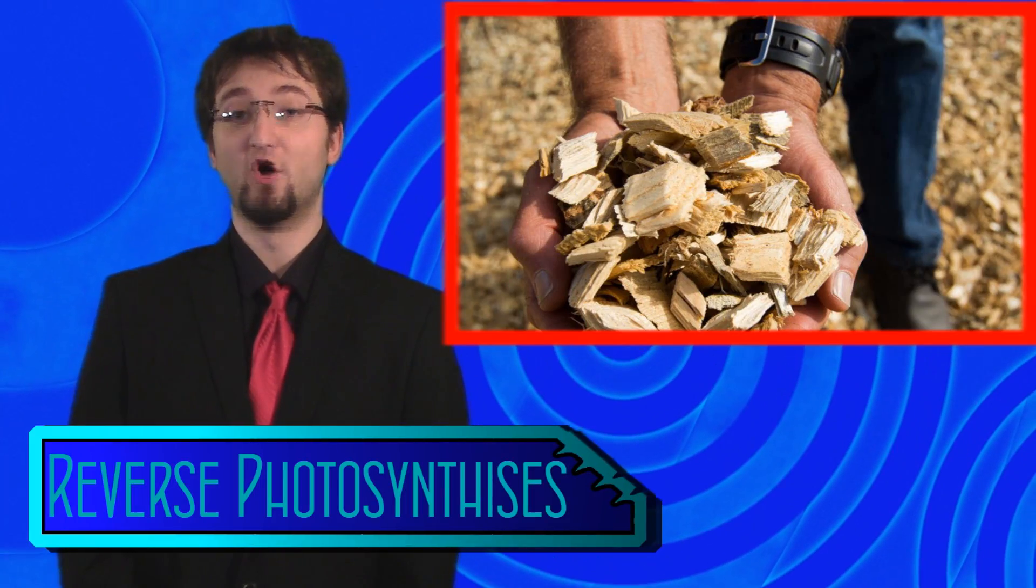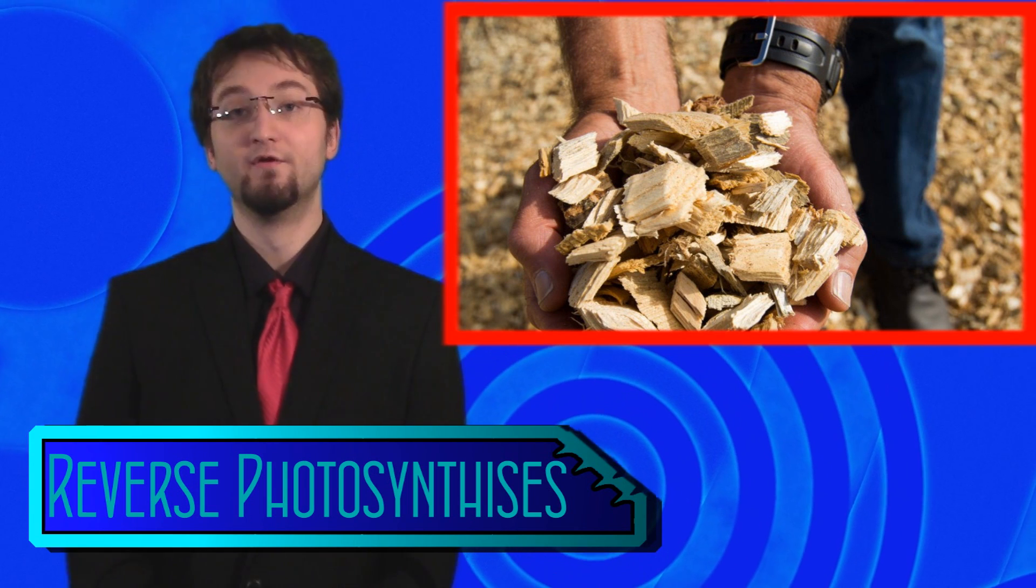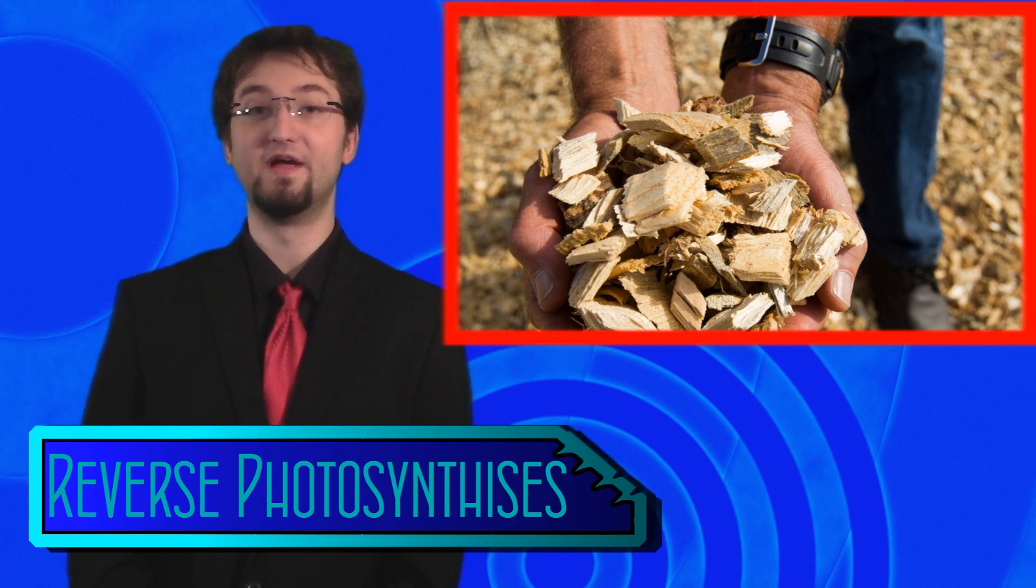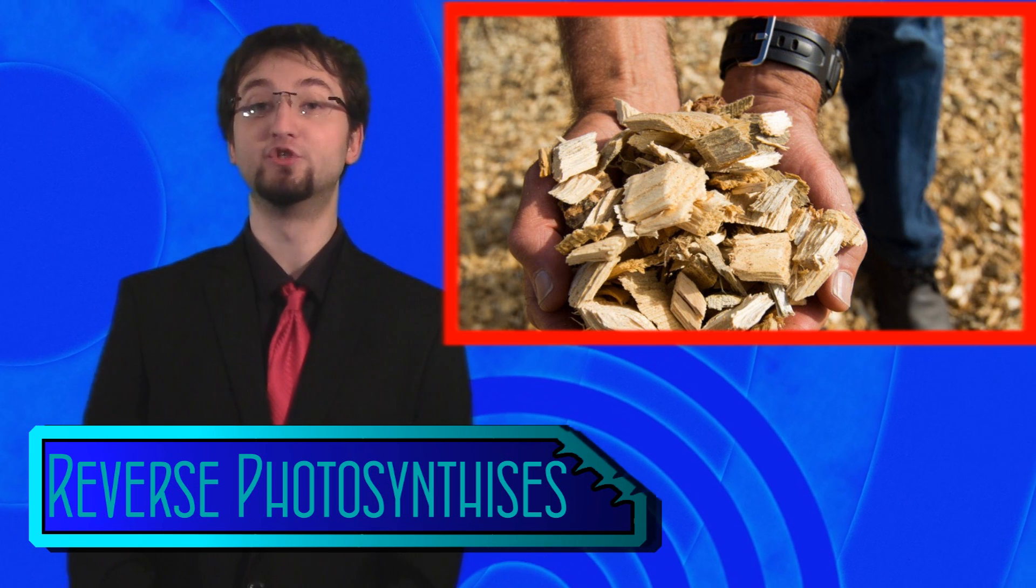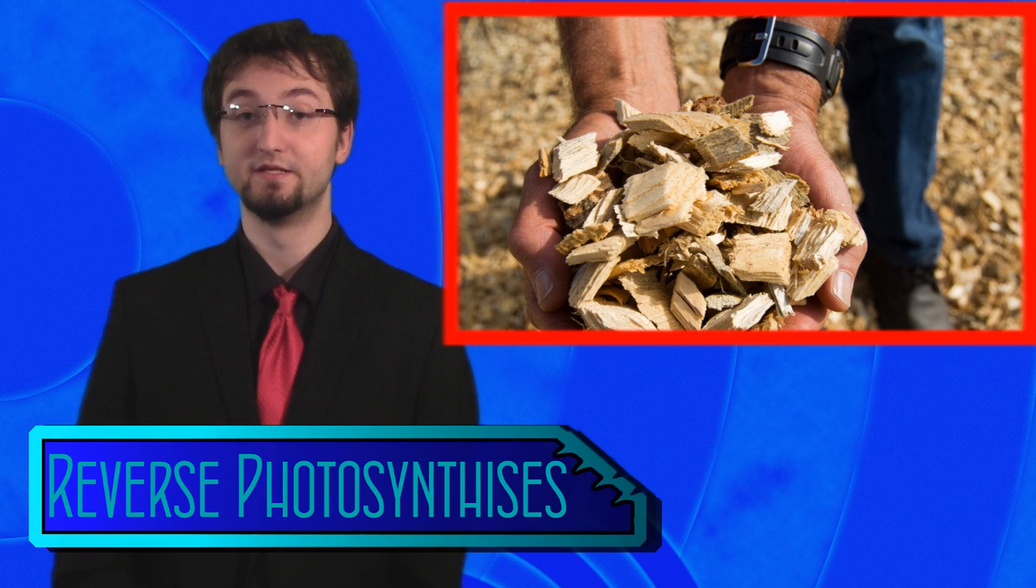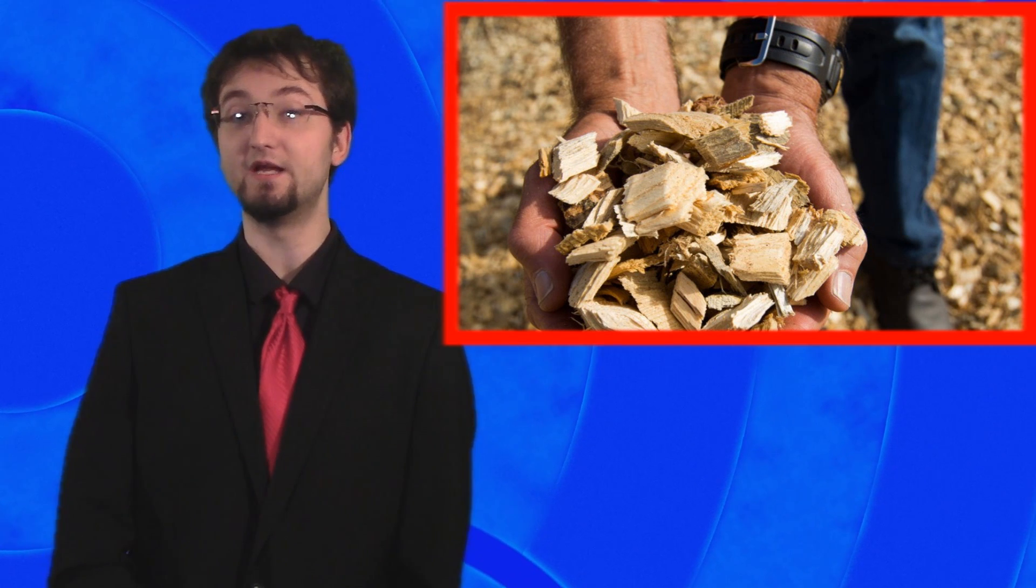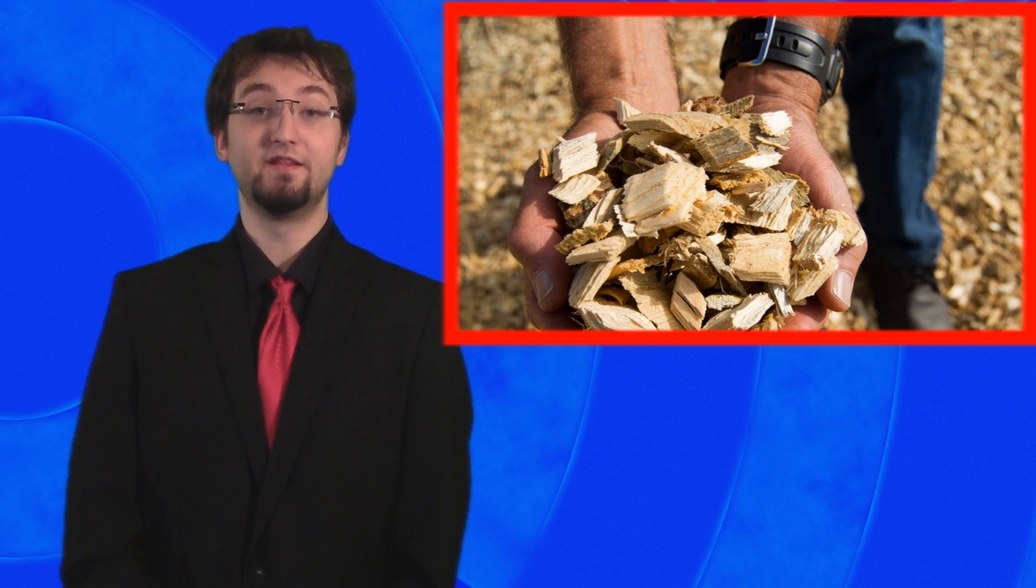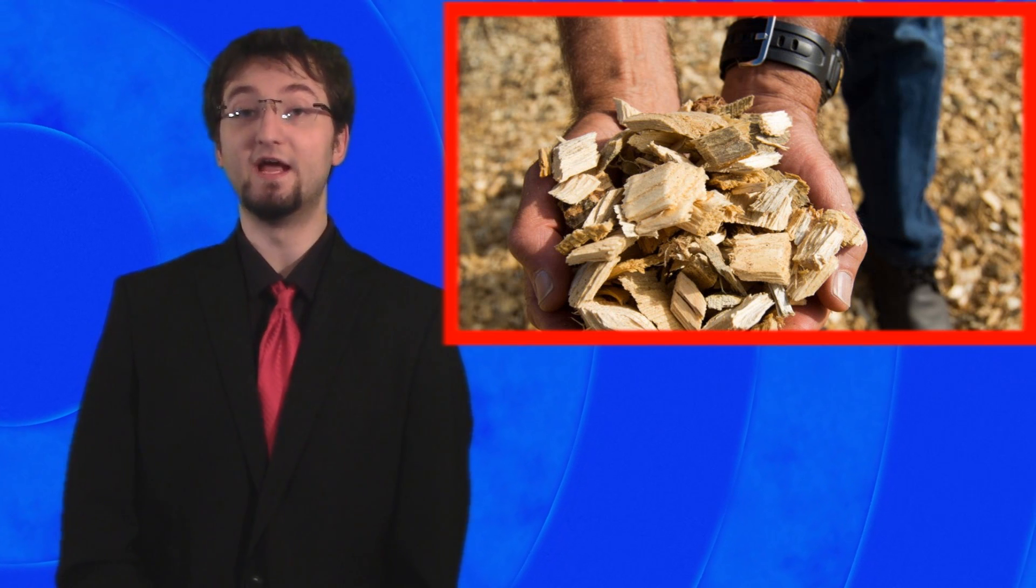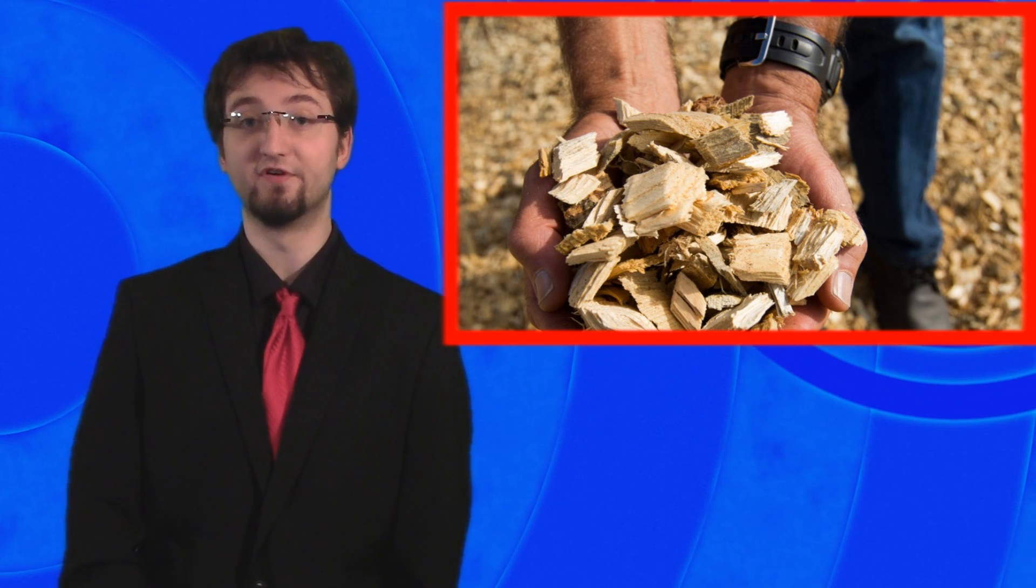Scientists at the University of Copenhagen have developed what they call reverse photosynthesis. Photosynthesis is the process plants take in order to create sugars using sun and air. In this new process, biomasses from straw or wood can be returned to a state used for fuel. The key to this process is a newly discovered enzyme that can break down components in the process and convert it into fuel.